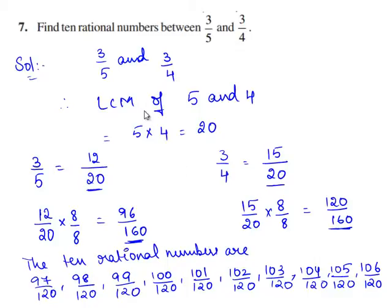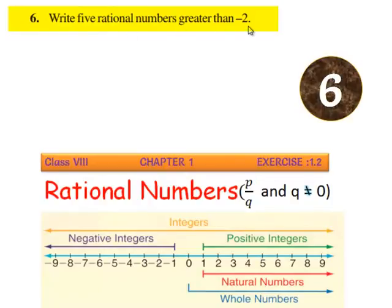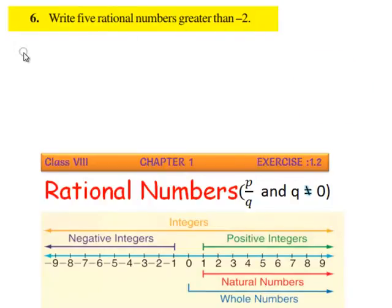Hence, in the same procedure, we can find any number of rational numbers between two given rational numbers by converting the given rational numbers into their equivalent rational numbers. Now, let us move on to the sixth question. The question is: write 5 rational numbers greater than minus 2. Let us move on to the solution.